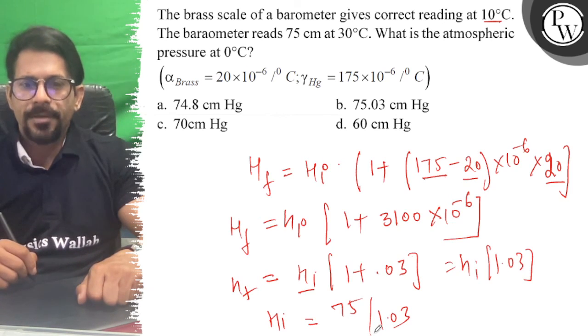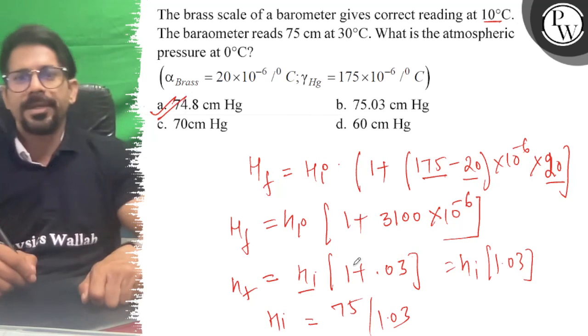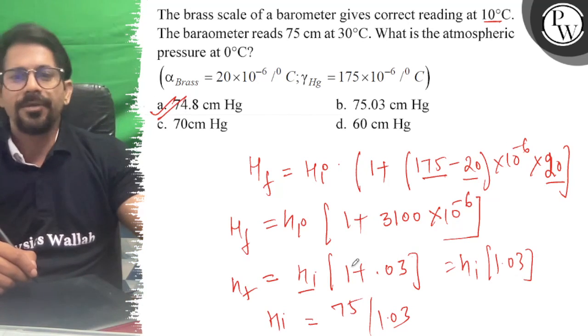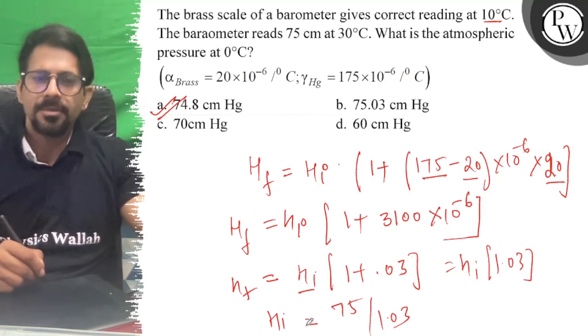So if you have 75 divided by 1.03, this answer is 74.8. So right answer is 74.8. That is the correct option. All the best. Thank you.